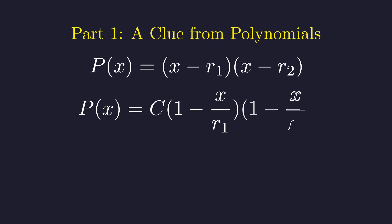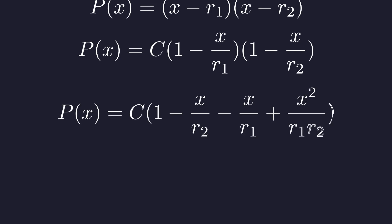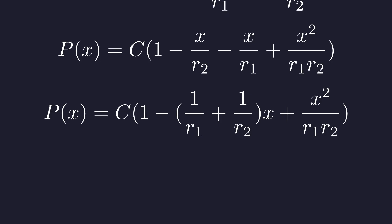We can write this in a different form, which will be incredibly useful. Notice the roots r₁ and r₂ are still the same, and p(0) is c. Expanding the terms gives us this expression. Now, let's factor out the variable x from the middle terms.